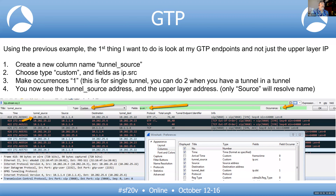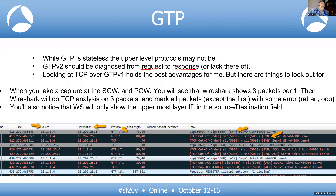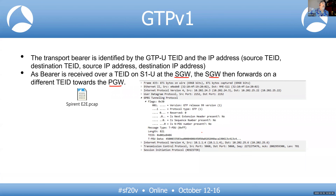GTP is a tunnel, so underneath any packet you have both an outer tunnel IP and the actual IP going to the internet. By default, the Wireshark dissector shows only the topmost IP header in the source and destination columns. So if you need to see both the tunnel information — which eNB to which S-Gateway — and the device's internet source and destination IP, you need to add custom columns.